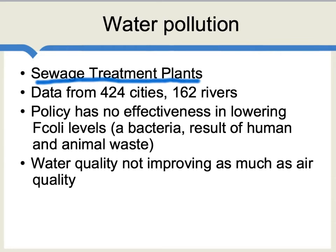What they find is that overall, water regulation has been much less effective than air pollution regulation. For instance, policy has not been effective in lowering levels of E. coli. You can think of E. coli as a bacteria which is the result of human and animal waste — it's one way of measuring the cleanliness of your water supply.